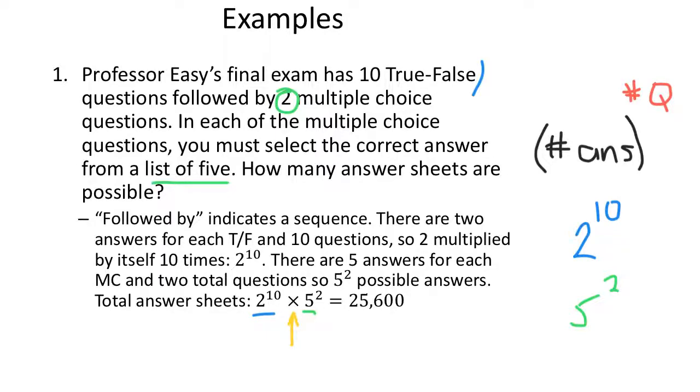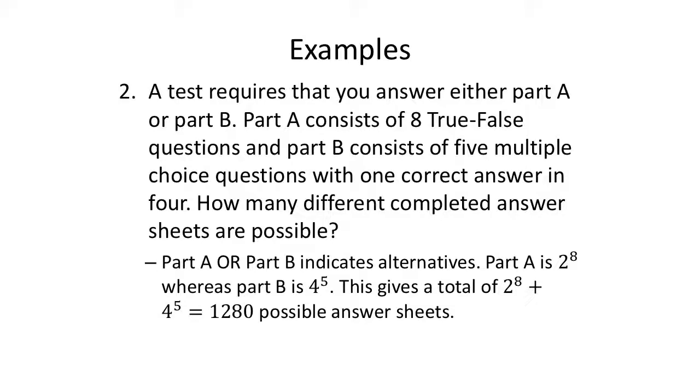Let's look at the next example. A test requires that you answer either part A or part B. Now you're having options, you have alternatives. Part A consists of eight true or false questions. And part B consists of five multiple choice questions with one correct answer in four. How many different completed answer sheets are possible? So let's boil this down. We have the option of part A or part B. Or indicates alternatives, I'm going to add.